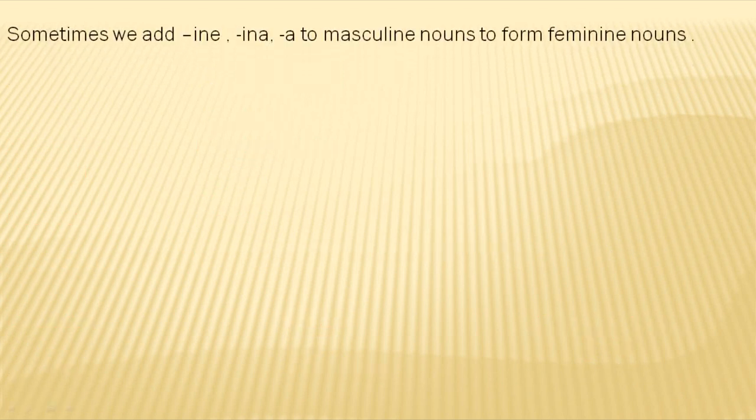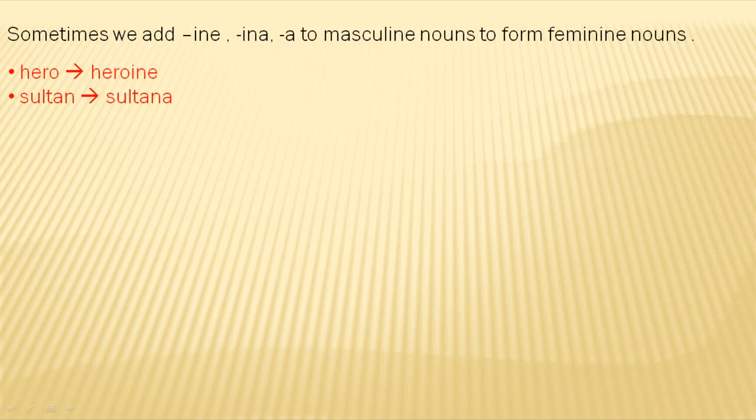Sometimes we add -ine, -ina, or -a to masculine nouns to form feminine nouns. For example, hero is masculine gender, and by adding -ine it becomes heroine, which is feminine gender. In the same way, sultan becomes sultana.